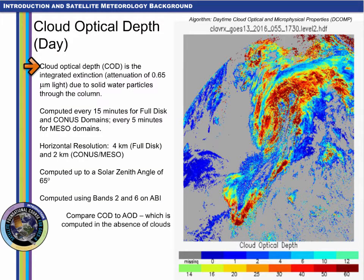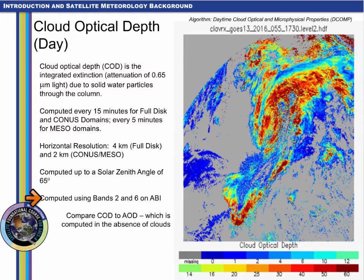Cloud optical depth is a baseline product computed using different algorithms in the day and at night. It is computed every 15 minutes in the full disk and CONUS domains and every 5 minutes in the meso domains. Horizontal resolution is 4 kilometers for full disk, but 2 kilometers for CONUS and meso domains. It is computed up to a solar zenith angle of 65 degrees. The daytime algorithm uses the visible band 2 at 0.64 microns and the cloud particle size band 6 at 2.25 microns, and requires cloud mask, cloud phase, and cloud height as input.